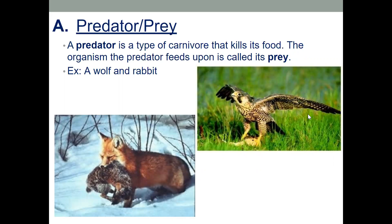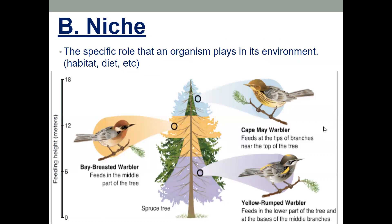A niche is the specific role that an organism plays in its environment — habitat, diet, etc. Looking at the example in the book, there's a tree with three different species: the yellow-rumped warbler, which lives in the bottom half; the bay-breasted warbler, which feeds in the middle; and the cape may warbler, which feeds at the tips of the branches. Even though those three species share the same habitat, they have different niches, which means they won't compete against each other.